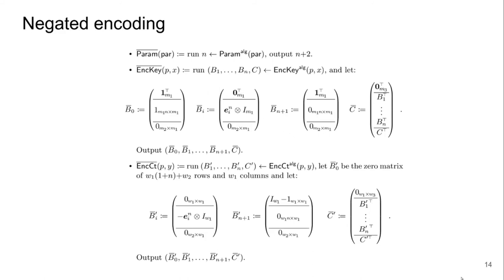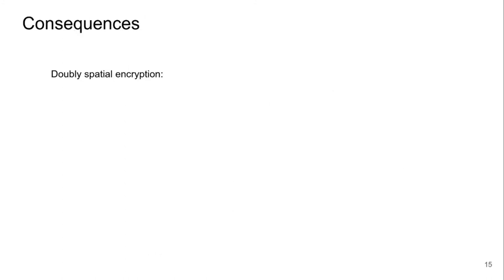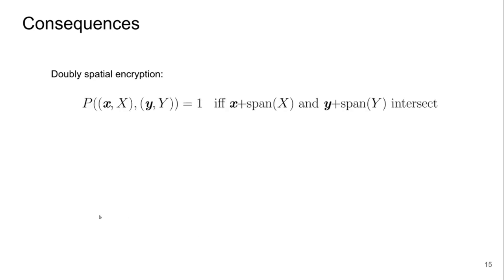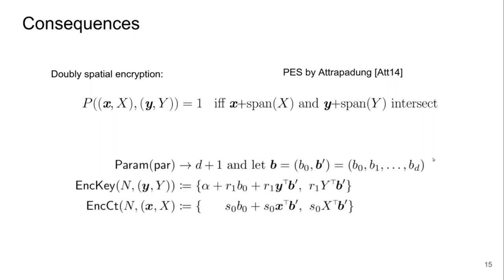Now that we have a generic transformation that negates any pair coding scheme, let me discuss the consequences. First, we can negate any encoding. People were designing both the normal and negated versions by hand, but now we get the negated version for free. For doubly spatial encryption — given a vector and matrix, and another vector and matrix, the predicate is one if and only if the two spaces intersect — there was a pair coding by Attrapadung, but the negated version was unknown. Our negation transformation gives, to the best of my knowledge, the first pair coding for negated doubly spatial encryption.